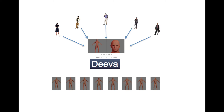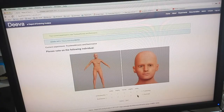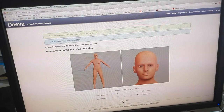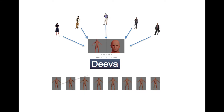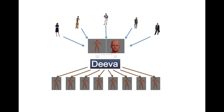Voting is a simple task. Watch the proposed character and check the boxes that seem appropriate. Each vote will improve the knowledge of D.Va about how people relate non-physical descriptions of a character to its appearance.